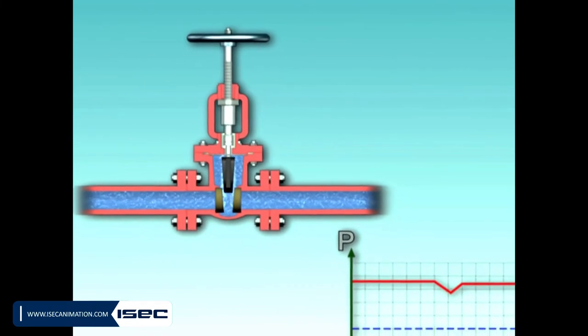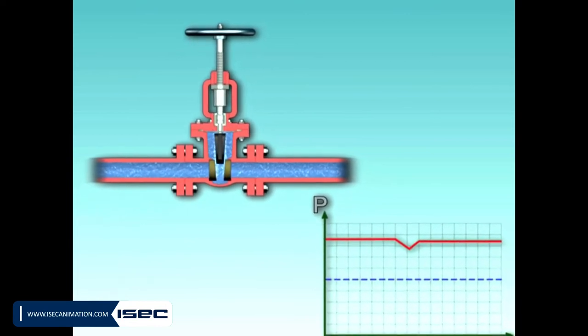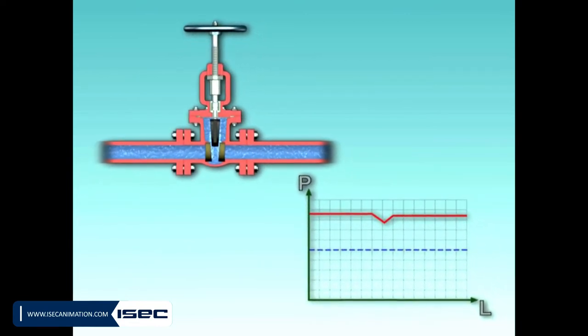First position: There is no crossing point between the curve and the line. Consequently, there is no problem and the service fluid remains along the valve.